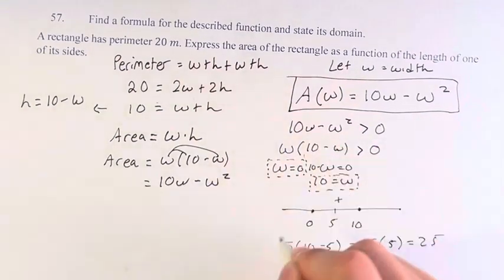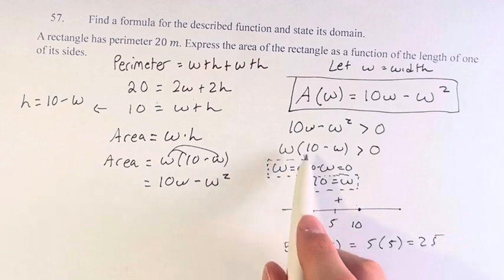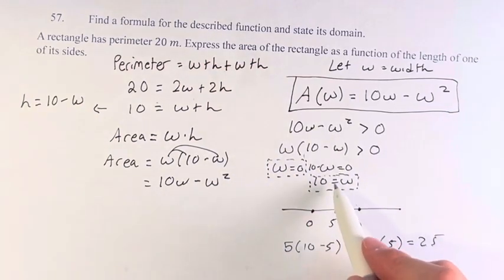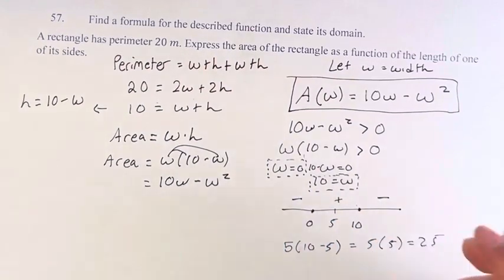And we know if we don't have any repeating roots, we don't have like w squared or 10 minus w cubed. We just have one root w equals zero and one root w equals 10. We know that this alternates negative, positive, negative, positive, and so on.